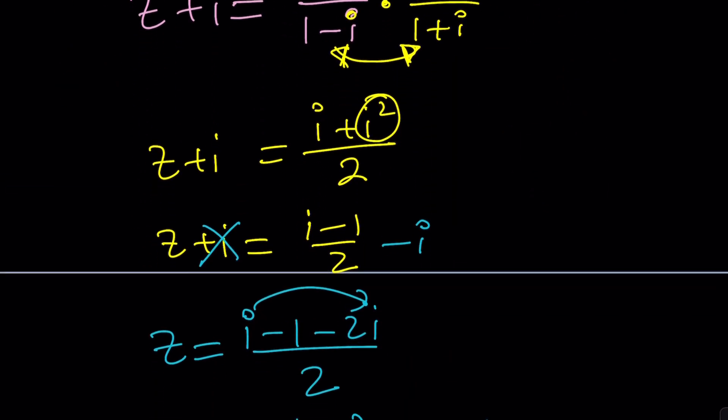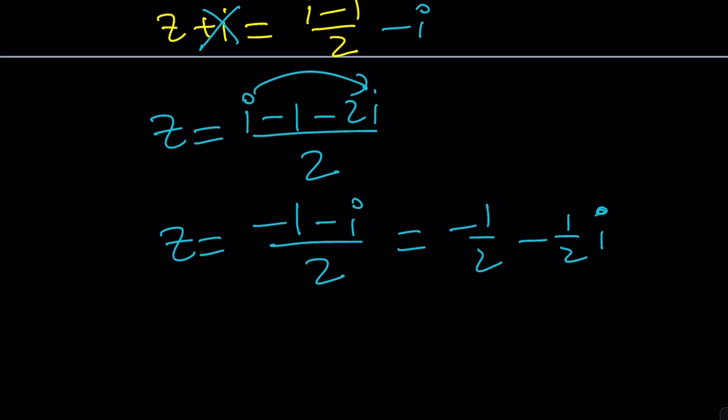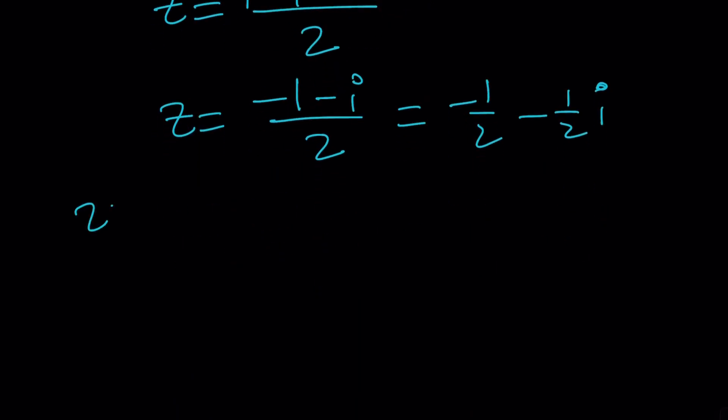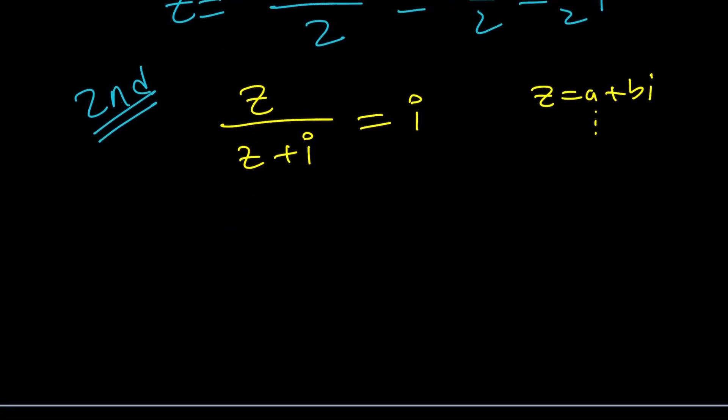We could possibly talk about a third method maybe. Or you're going to let me know if you do find one, right? So for the second method, here's what we're going to do. We have Z over Z plus I equals I. I think the third method could probably be replacing Z with A plus B I and then using the cross product. We could definitely give it a try. But let's go ahead and go with this next.